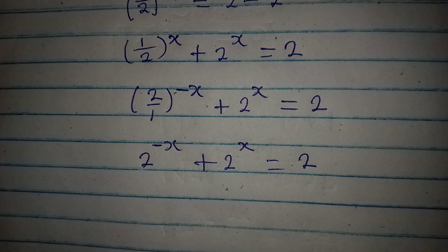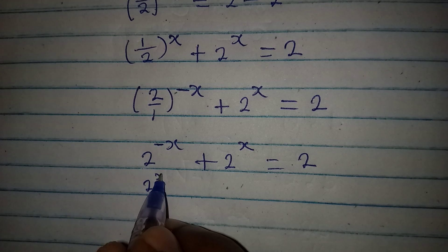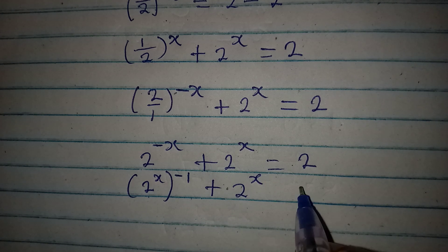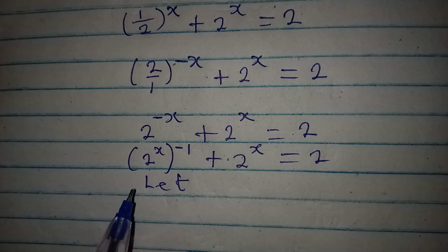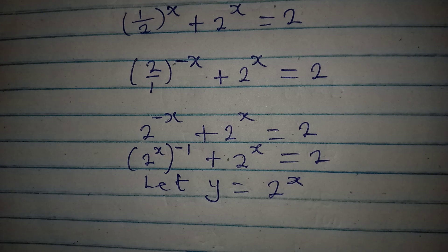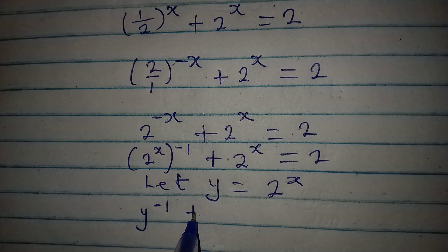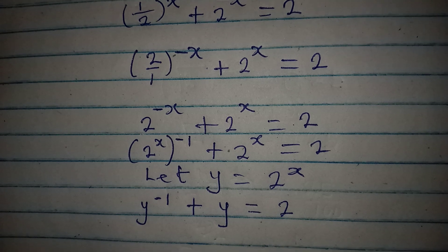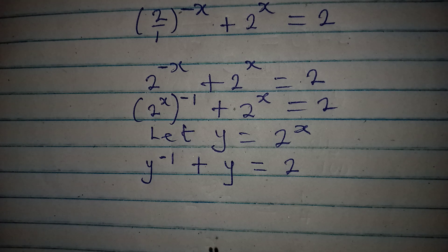We can rewrite this as 2 to the power of x to the power of negative 1, plus 2 to the power of x, equal to 2. Now let a letter represent 2 to the power of x — let y equal 2 to the power of x. So here we have y to the power of negative 1 plus y.